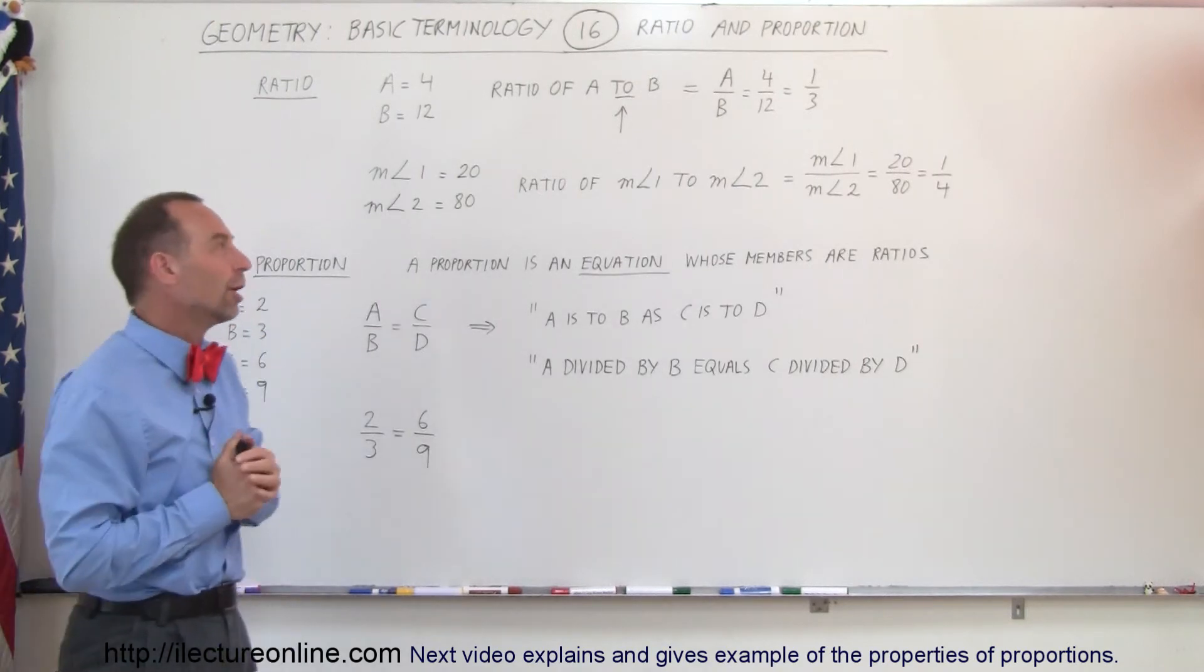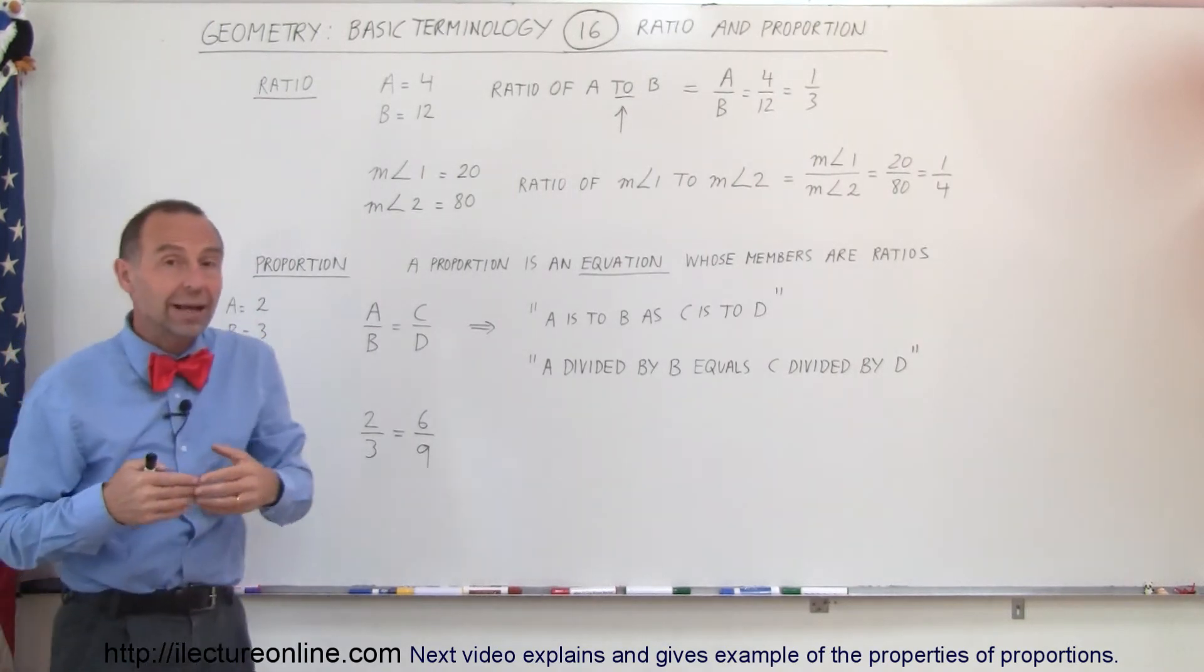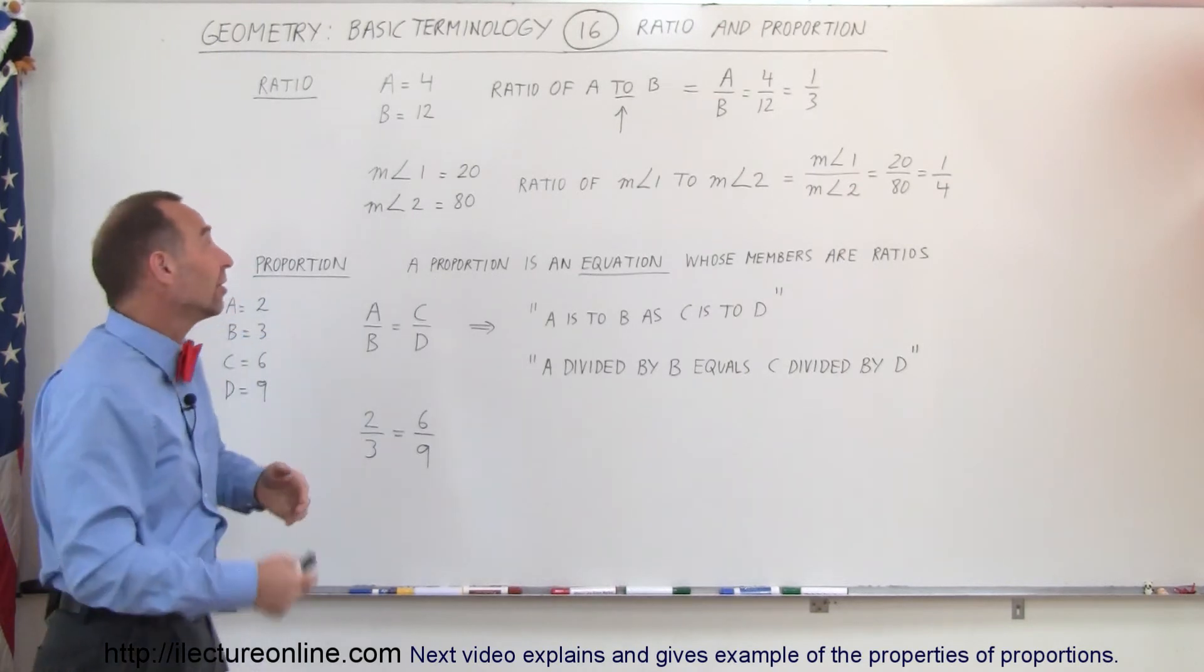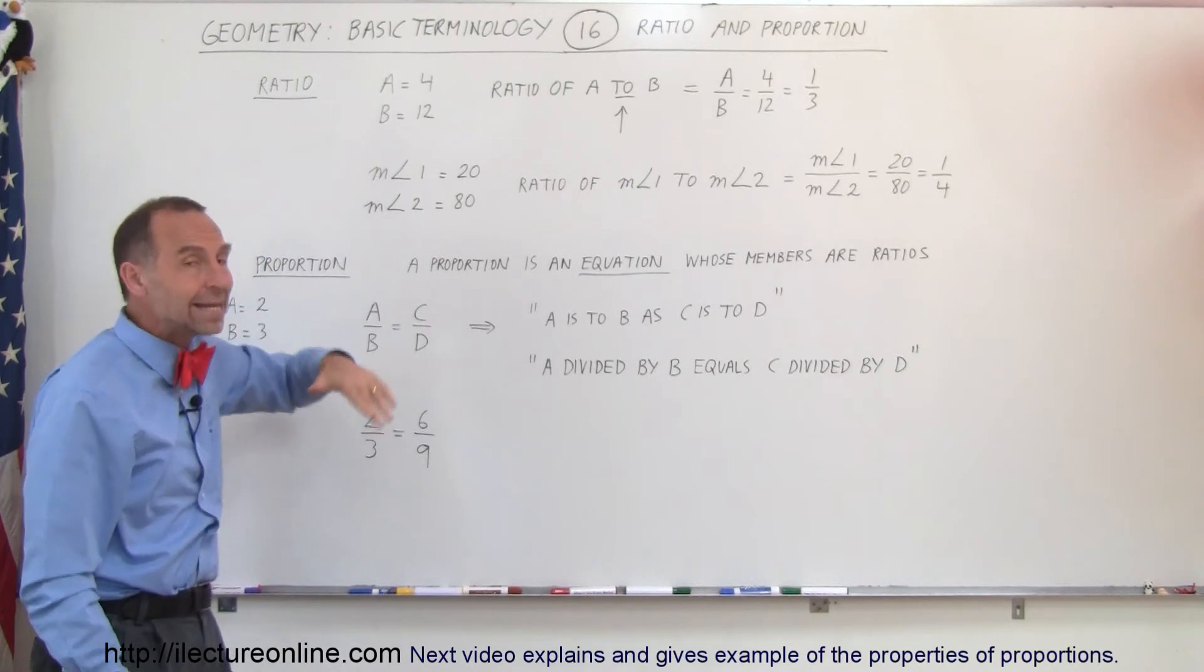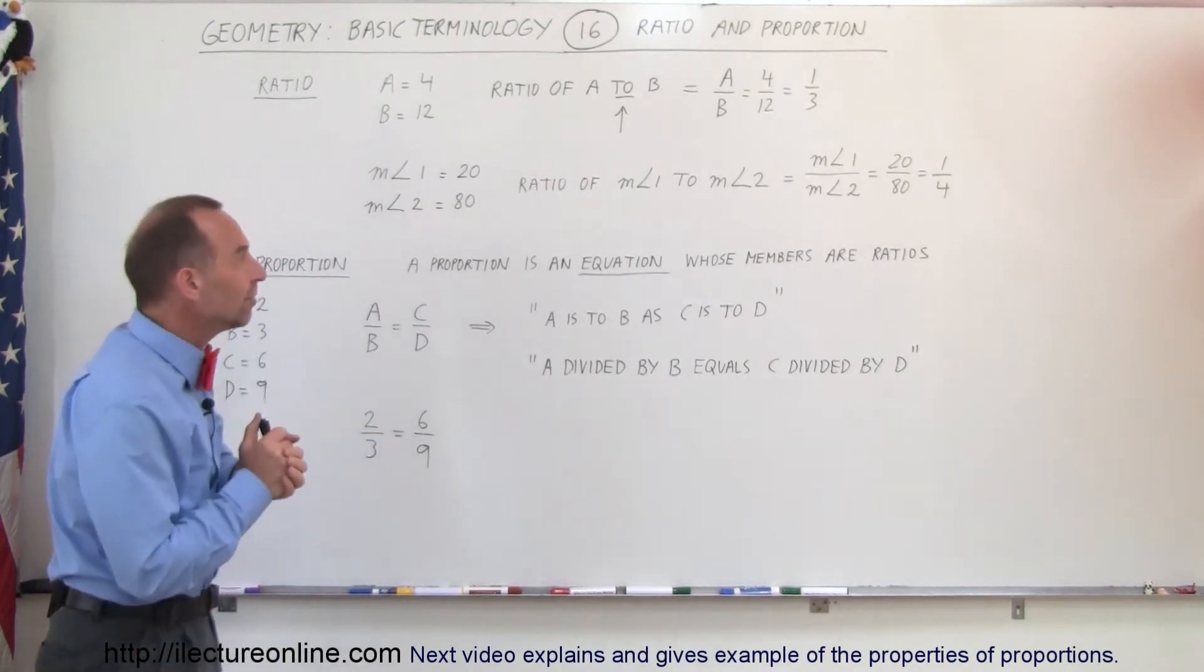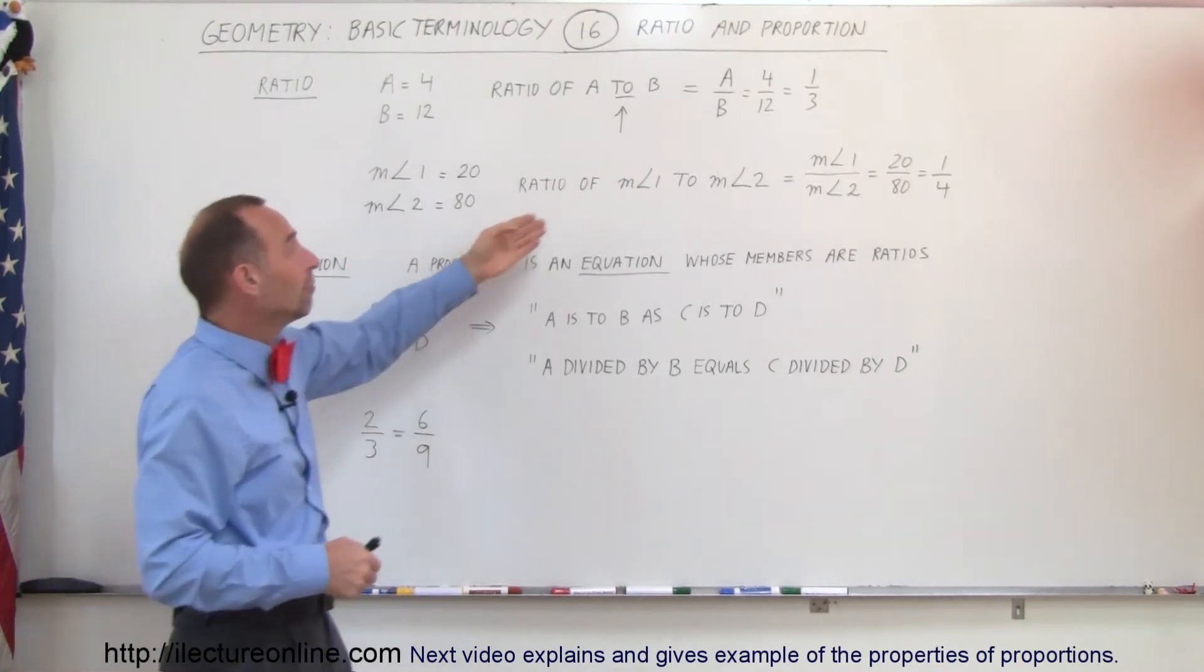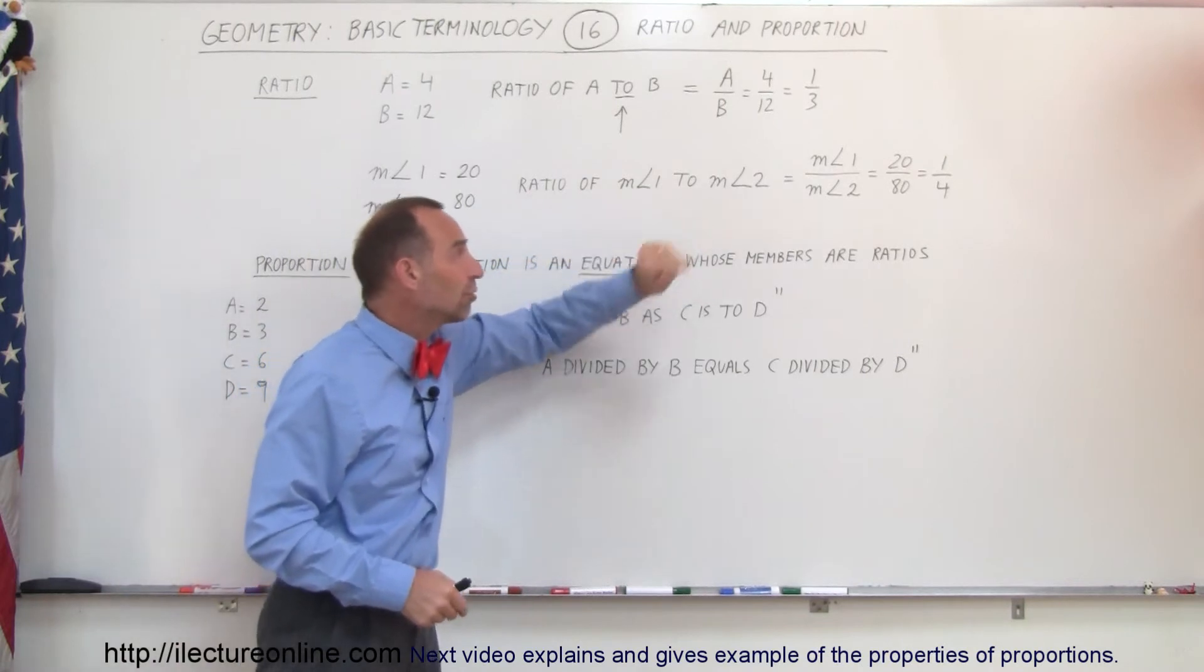That's how we compare one number to the other number. We can also compare angles or the measure of an angle. Let's say the measure of angle 1 is equal to 20 and the measure of angle 2 is equal to 80. And typically, we're talking about degrees. And so when we say the ratio of the measure of angle 1 to the measure of angle 2,